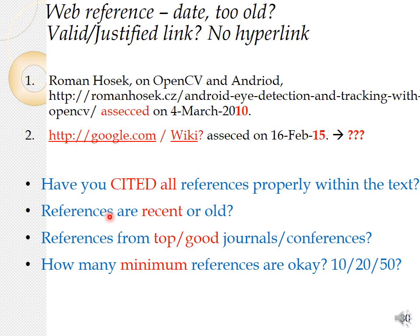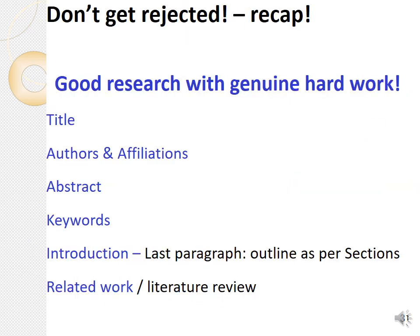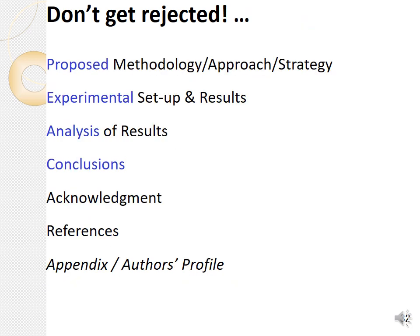What is the minimum number of references? If you have a six- to seven-page paper, it should be around 20 or more. If you are writing a survey paper with only 10 to 20 references, that is not enough — it should be much more, from top-class sources. To recap: good research with genuine hard work, title, authors and affiliations, abstract, keywords, introduction — the last paragraph should outline the paper's sections — related work or literature review, proposed methodology, experimental setup and results, analysis and discussion, conclusions, acknowledgement when necessary, and references. Sometimes an appendix or author profiles are added.